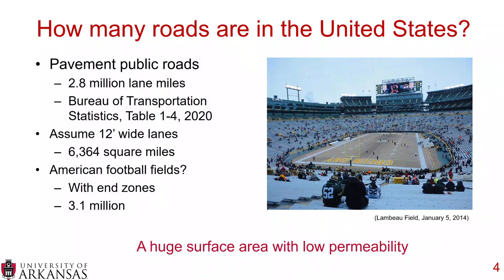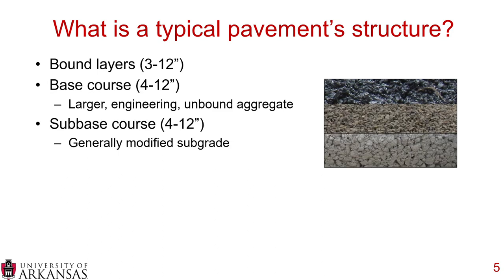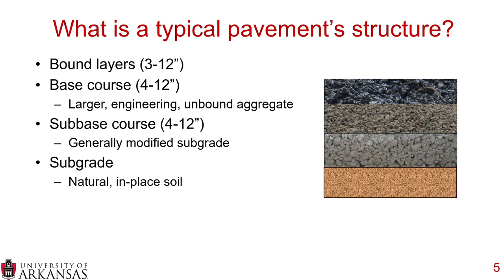This is an absolutely huge surface, and most of these roads have relatively low permeability. When we think about most of our roads, we have some sort of bound layer in our pavement structure, anywhere from 3 to 12 inches thick. Under that, we have base courses — large, engineered, unbound aggregates — 4 to 12 inches thick. Our sub-base course is generally modified in-place soil, 4 to 12 inches.